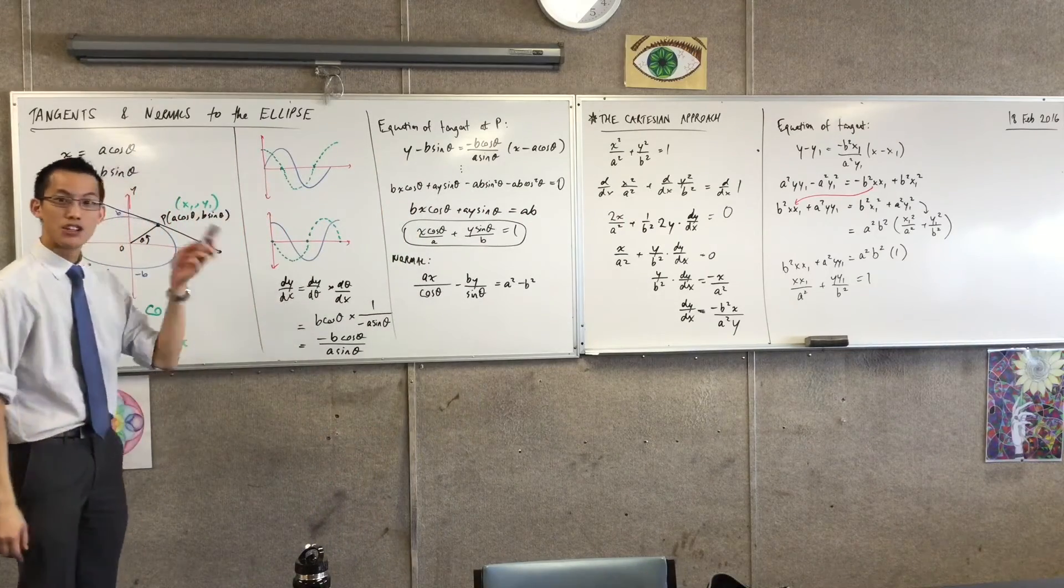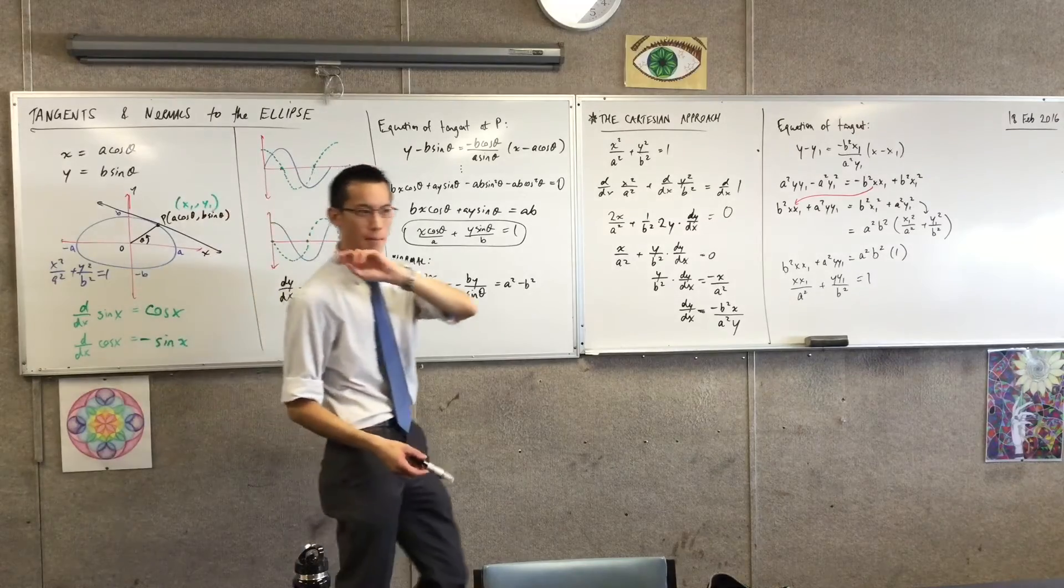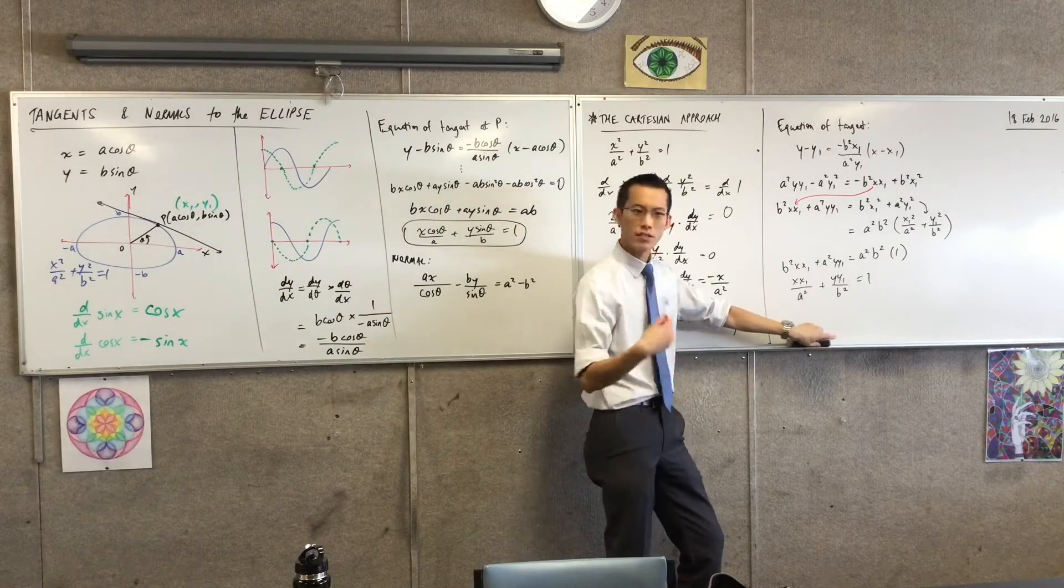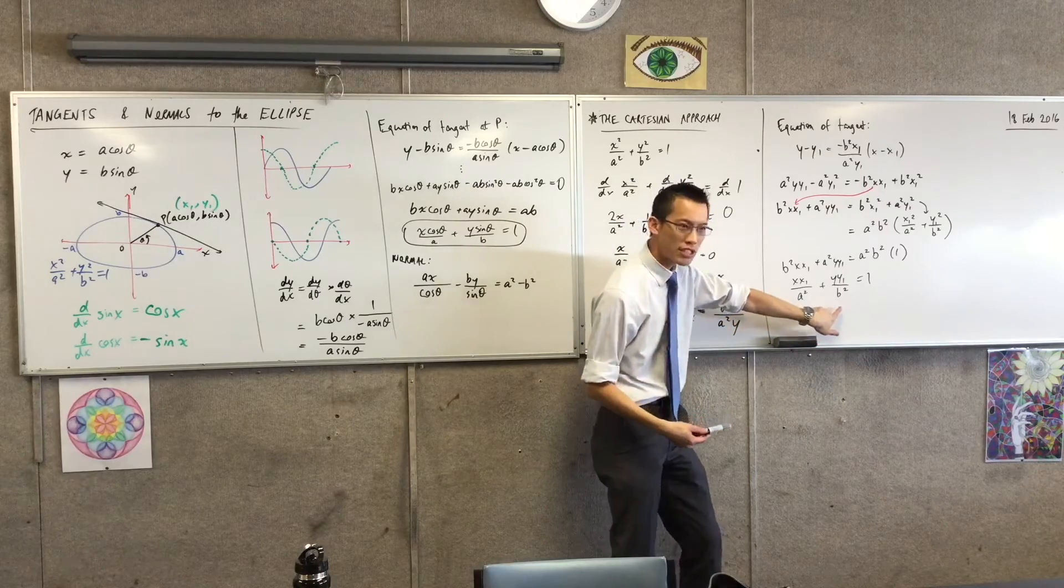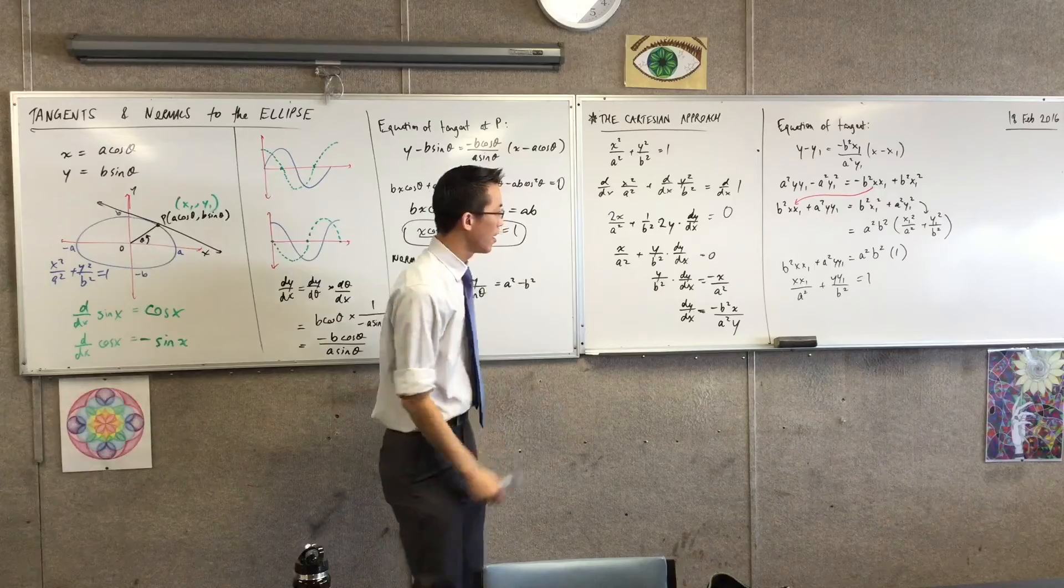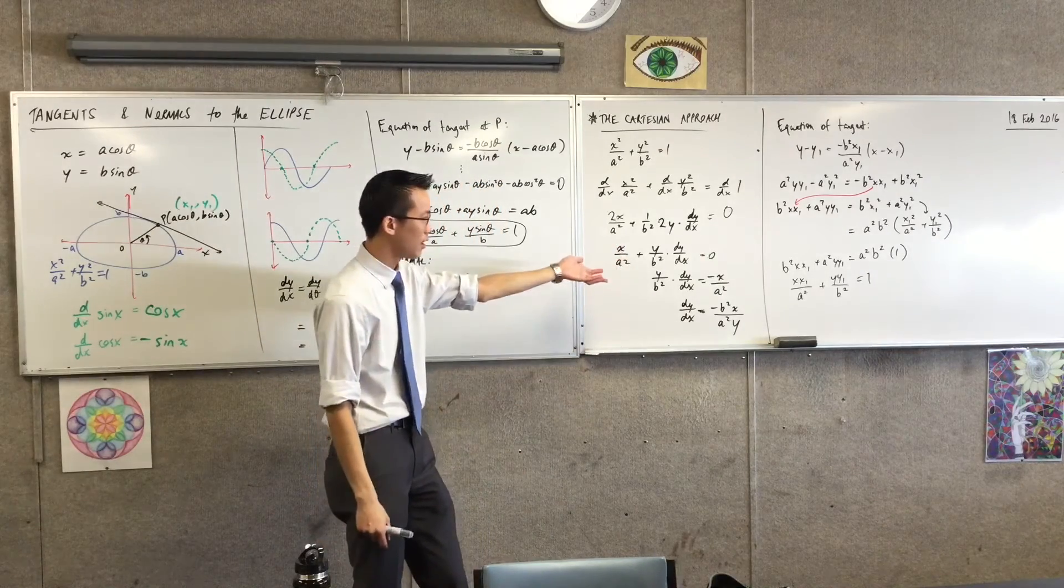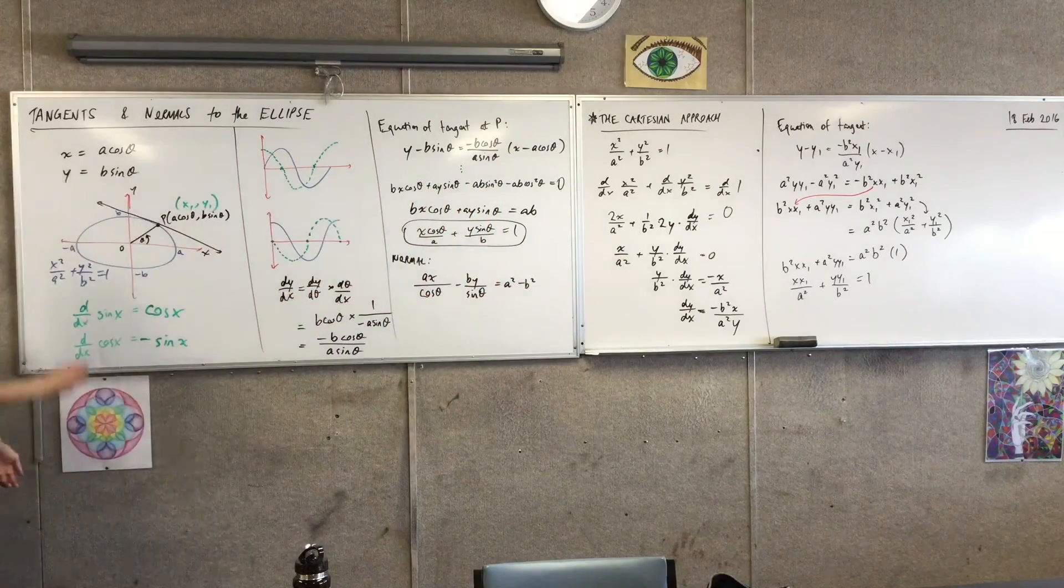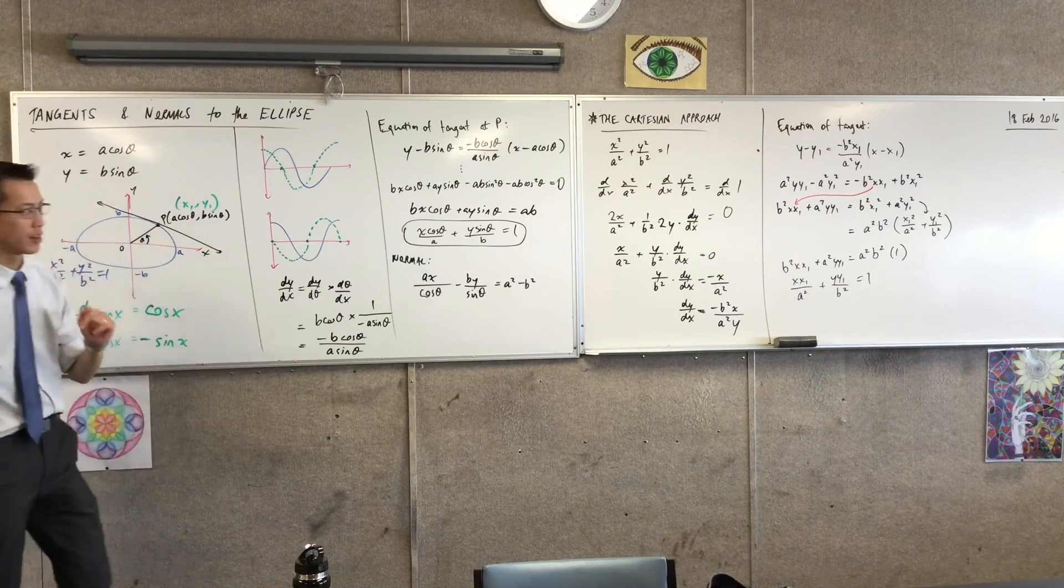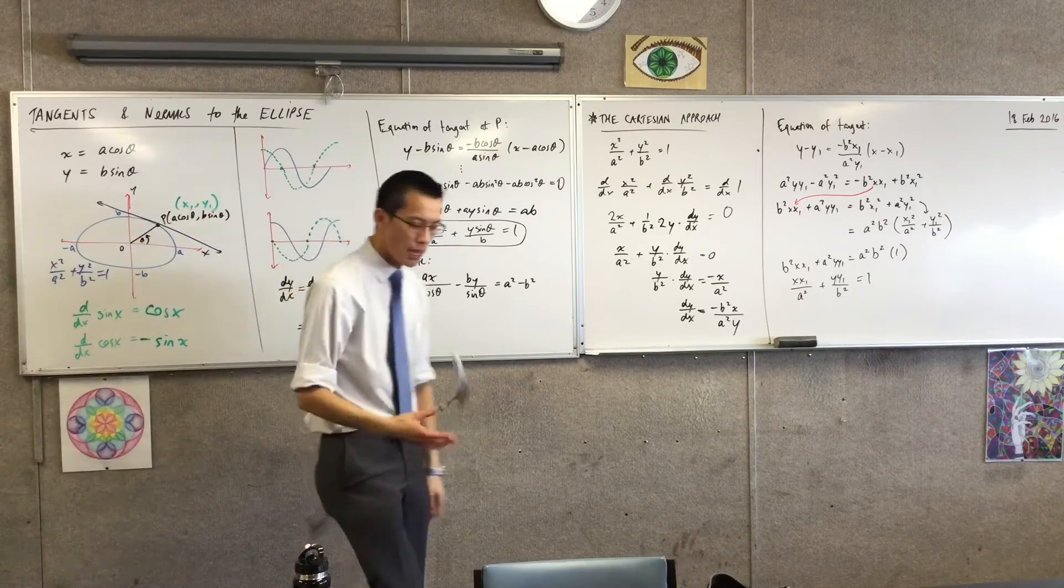In fact, do you remember, bless you, when we were doing the parametrics of the parabola, we got things like this, where the equation of the tangent looked almost exactly the same as the equation of the parabola itself. Do you recall that? So what you've got here is almost identical to this. Do you see how similar it is? I've just taken one of the x's turned it into x₁. Same for the y₁.